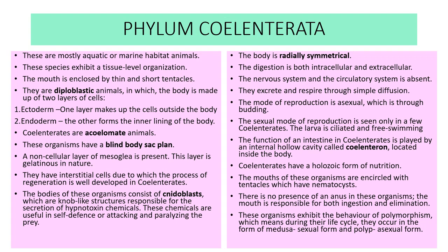These chemicals are used for self-defense as well as attacking and paralyzing the prey. The body is radially symmetrical. Digestion is both intracellular and extracellular. The nervous system and circulatory system are absent in cnidarians. They excrete and respire through simple diffusion. The mode of asexual reproduction is through budding, and sexual reproduction is with the help of free-swimming ciliated larvae.